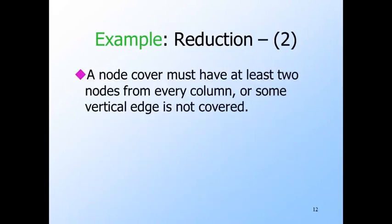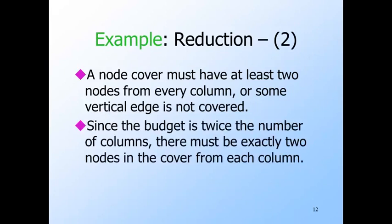The first thing to observe about the constructed graph is that a node cover must have at least two of the three nodes in every column. If it has only one node in the column, then the vertical edge between the two unselected nodes will not be covered. And if the node cover has zero nodes from a column, then all three edges in that column will be uncovered. But the budget is exactly twice the number of clauses. So if all three nodes in one column were in the node cover, then some other column would be shortchanged. The conclusion is that if there is a node cover of exactly K nodes, then these K nodes must be exactly two from each column.